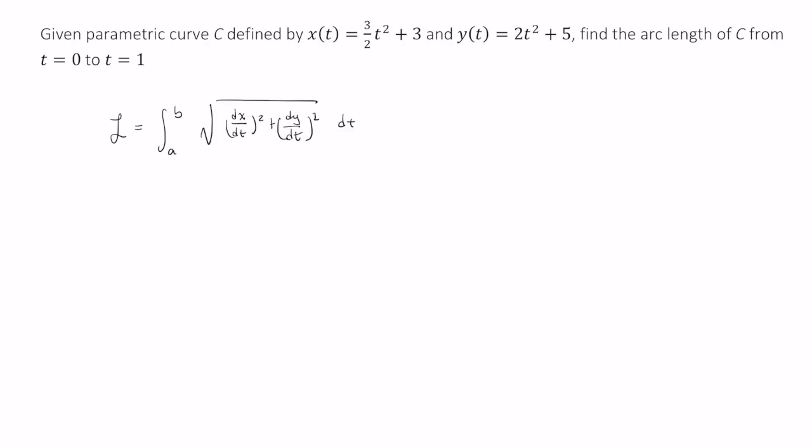So let's set that up for our purposes. We have the integral from 0 to 1 and in our square root we want dx over dt squared and the square of dy over dt. So let's compute those here. dx over dt is equal to 3t and dy over dt is equal to 4t.